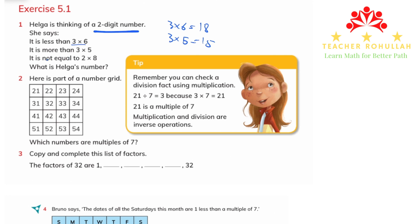She also says it is not equal to 2 times 8. 2 times 8 is equal to 16. The numbers between 15 and 18 are 16 and 17. If it is not 16, then the answer is 17. That means Helga is thinking of 17.